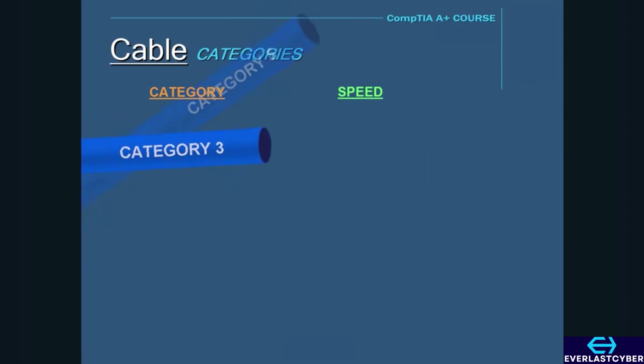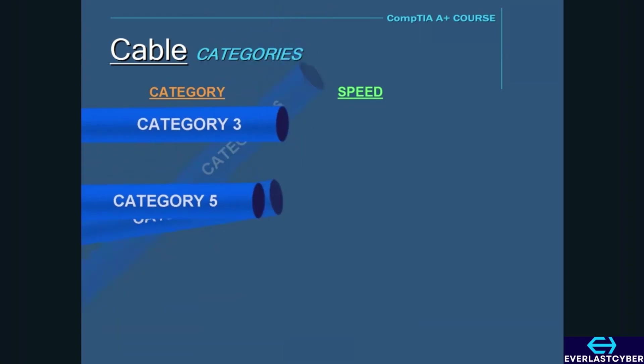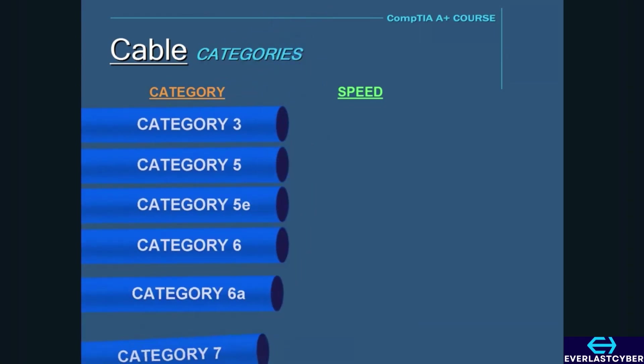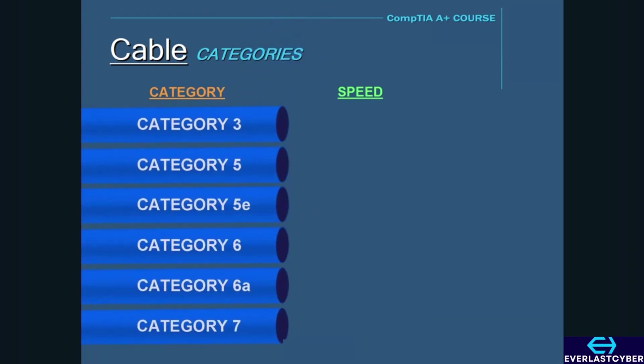There are five different categories of twisted pair cables you need to know for the exam. The difference between these is the maximum speed that can be handled without crosstalk. The numbers of these categories represent the tightness of the twists applied to the wires. Category 3 has a maximum speed of 10 megabits per second.